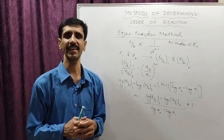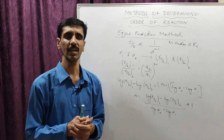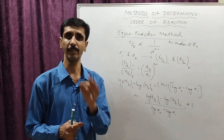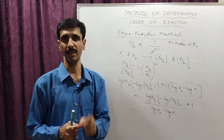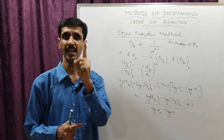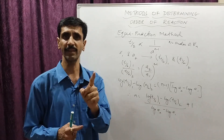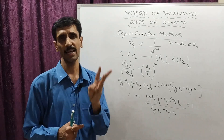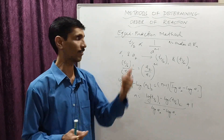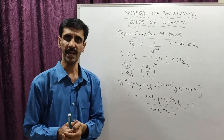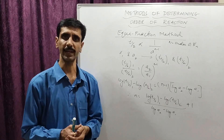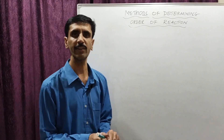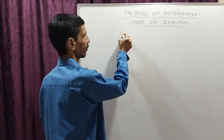In this way, we can find the order of reaction by a method called the equifraction method. This is the third method. The first method was the integration method, the second was the graphical method, and the third is this equifraction method. We now move on to the last method, called Ostwald's isolation method.